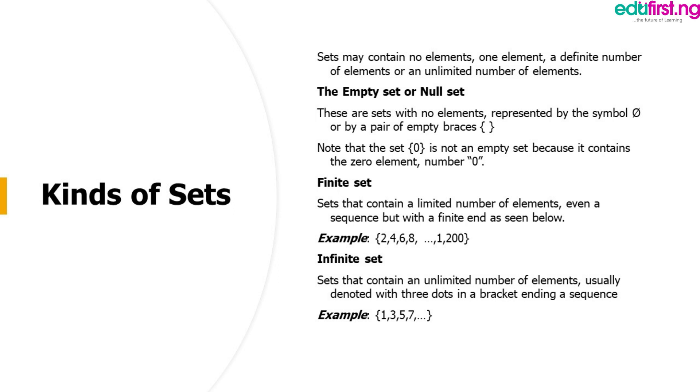Finite set. Sets that contain a limited number of elements, even a sequence but with a finite end as seen below. For example, 2, 4, 6, 8, dot dot dot, 1,200. The dot dot dot signifies infinite, but when it ends with a finite number, such a set is still seen as finite.